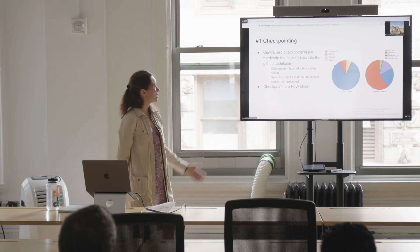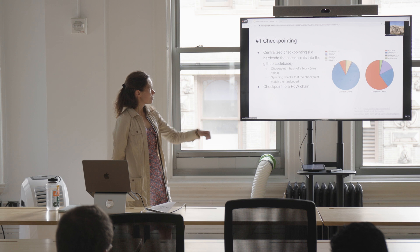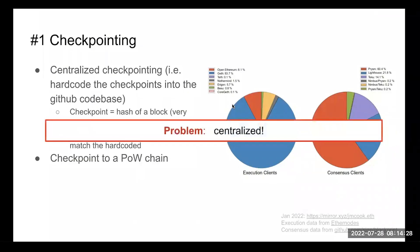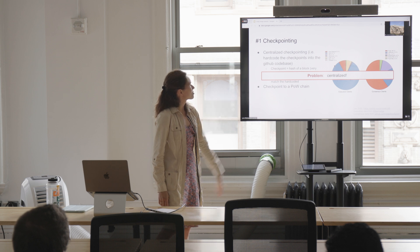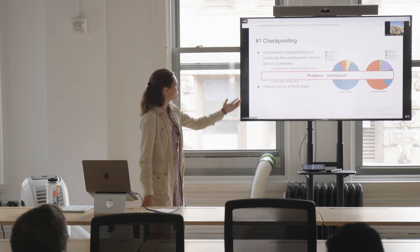Another checkpointing idea is to checkpoint to a proof-of-work blockchain, where you don't have the problem of susceptibility to long-range attacks. Some non-blockchain projects even use proof-of-work chains to checkpoint their data. The problem with the centralized approach is that you rely on everyone downloading the same client with the same checkpoint. The proof-of-work approach has the problem that the whole point of proof-of-stake is to get rid of proof-of-work — so you're back to the original problem.